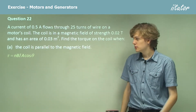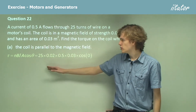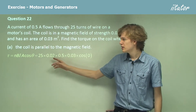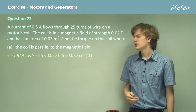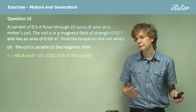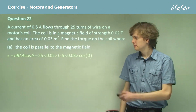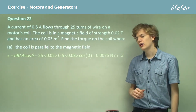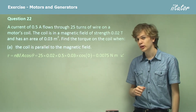Substituting in the numbers: N = 25 turns, B = 0.02 tesla, I = 0.5 amps, and A = 0.03 square meters. The cosine of 0 is 1. Multiplying all those together, we get 0.0075 Nm.